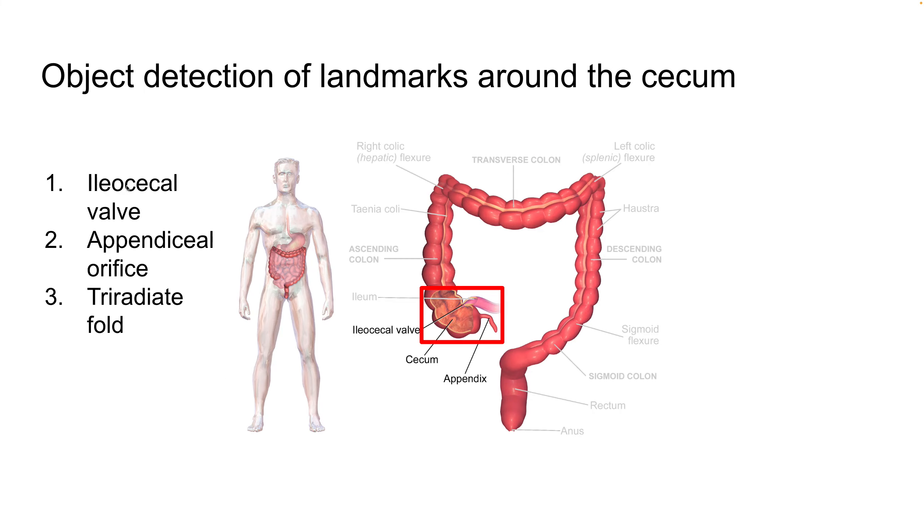Additionally, there's key landmarks. We detect the ileocecal valve, the appendiceal orifice, and tri-radiate fold, all listed here. This means the colon is not a uniform pipe. There's landmarks that an ordinary object detection pipeline can detect, and this is added to the pipeline.